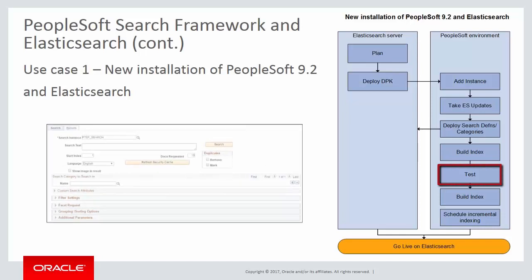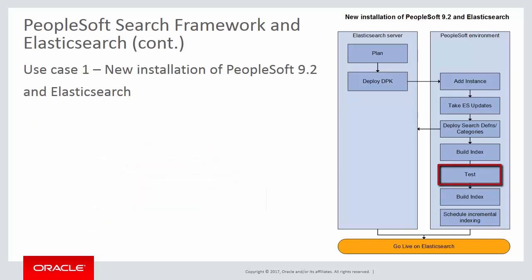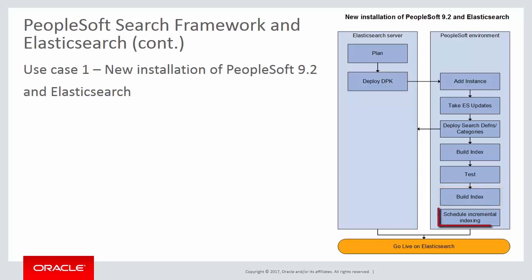Use the Search Test page to perform acceptance testing. PeopleTools 8.55 Search Technology Online Help contains detailed descriptions in the Working with PeopleSoft Search Framework Utilities topic. If using a different Elasticsearch server in production than the one used for testing, repeat the full index build. To keep search indexes current, schedule regular search index builds of type Incremental Index.